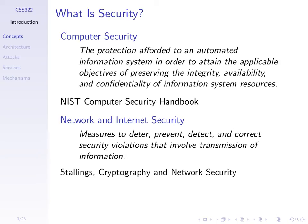Here's another definition of network and internet security — communications across a network, how do we keep them secure? The measures used to deter, prevent, detect, and correct security violations that involve transmission of information. It's about getting information from one point to another, transmitting information across a network. If there are security violations — when we transfer information across the network and something goes wrong with respect to security — we want to look at how do we stop such violations and, in some cases, fix and detect them.